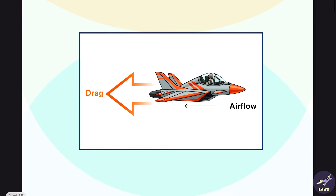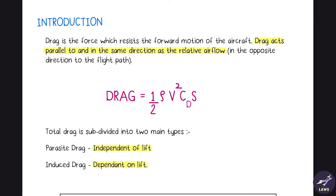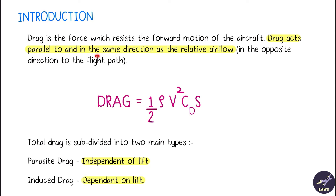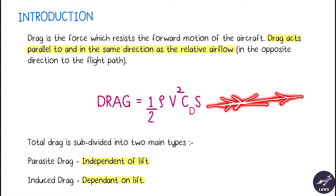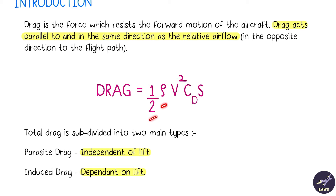Welcome back. Today we will be doing drag. Drag is basically the air resistance that an aircraft has to face when it travels through the air. It's a force which acts parallel and in the same direction as the relative airflow. It is also parallel and opposite to the direction of the flight path. The drag equation is: half rho v squared times Cd times S, where Cd is the coefficient of drag. The rest is the same as lift.